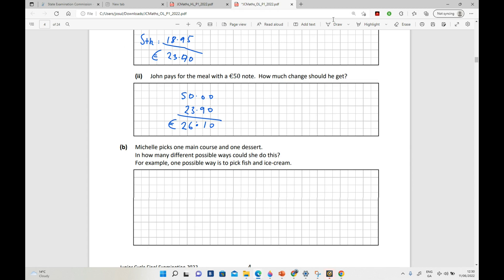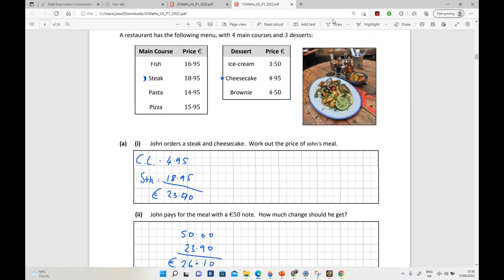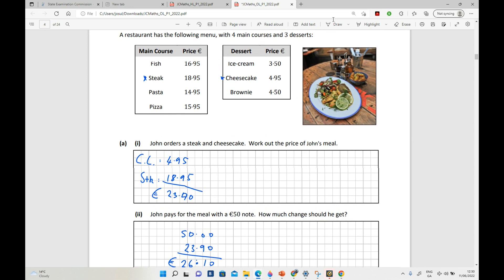Okay, so Michelle picks one main course and one dessert. In how many different possible ways could she do this? For example, one way is to pick fish and ice cream. So what you have here basically is, let's say Michelle picked fish. So she picked fish, she could either have the ice cream, the cheesecake, or the brownie. So for each of these she can have three of these.